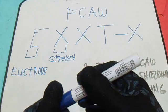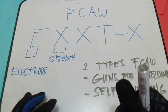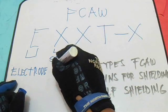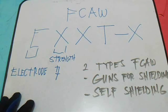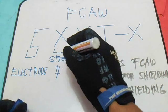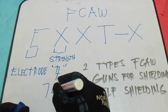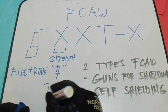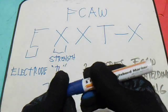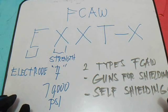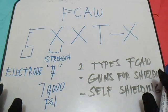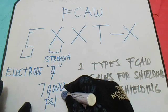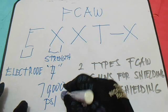What is the minimum tensile strength? For the FCAW, we have a 7. The 7 means the deposited weld metal has a minimum tensile strength of 70,000 PSI. This is the minimum weld tensile strength.